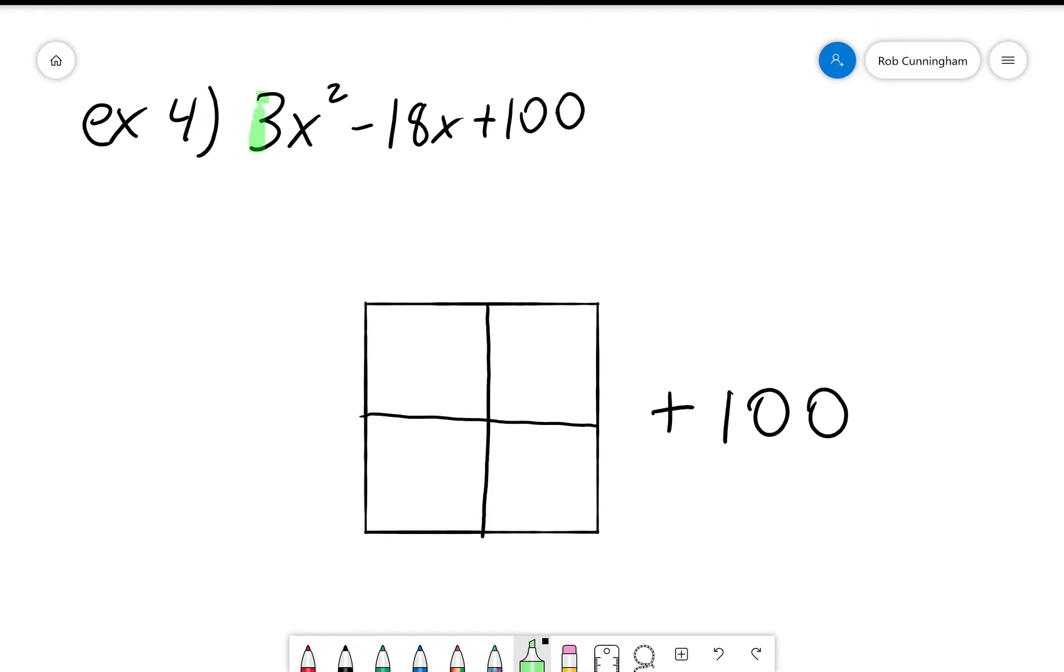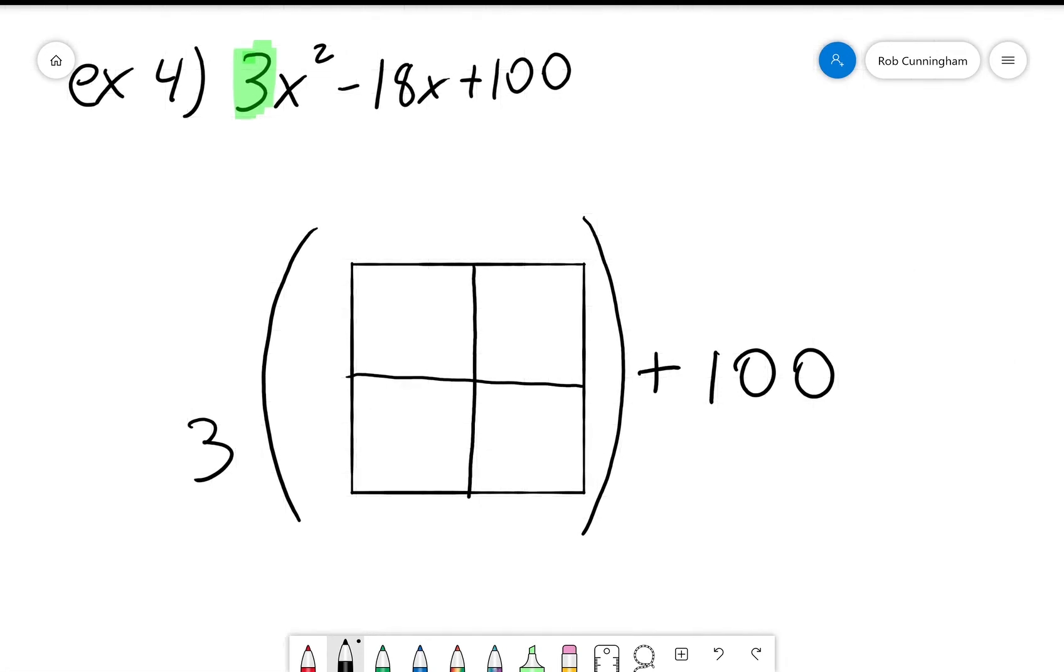There's a plus 100 here. And because of this 3, we're not just looking at 1 square, we're looking at 3 squares. Okay? I hope this makes sense. So inside the parentheses, the x squared is still in the upper left corner. Remember, this is multiplied by 3, so this is 3x squared.